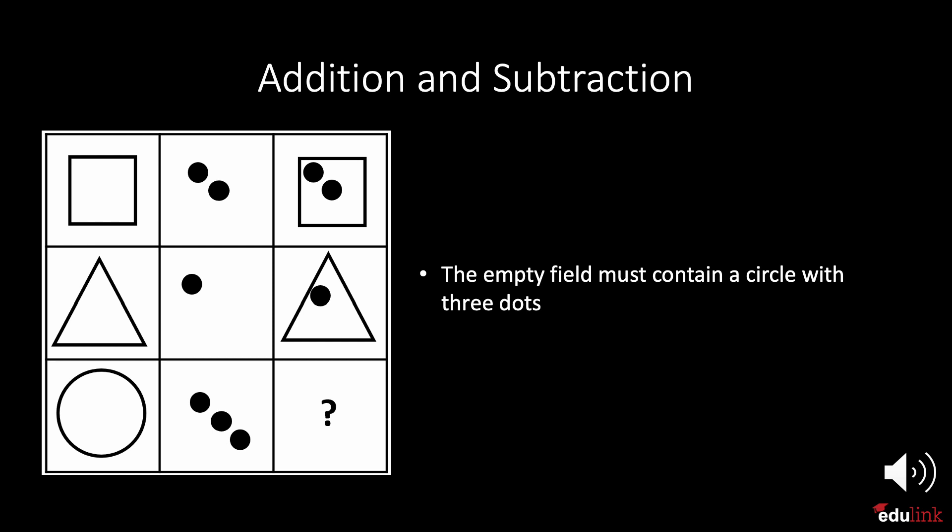The answer is a circle with three dots. This is an example of a pattern that adds up within a row. This means that the elements from the first two fields are added together to give the sum of the third field. In this example, the addition goes from left to right or within rows.